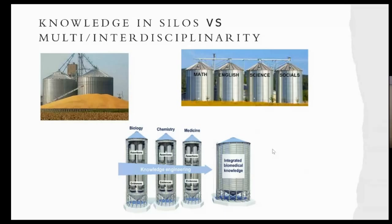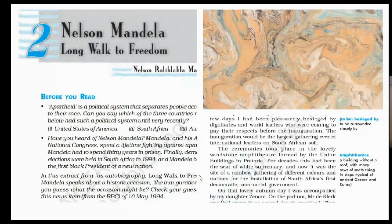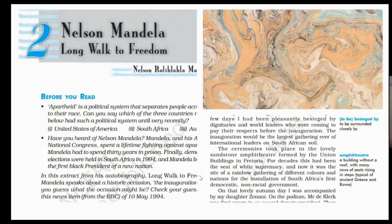Interdisciplinary or multidisciplinary knowledge is about not putting subjects in separate tanks or silos, but charting a path across different disciplines. Let me make that clear with an example from my paper. There is Miss Dhania, who is teaching an English class — this is from class 10. She's teaching a lesson on Nelson Mandela's Long Walk to Freedom, an excerpt from Mandela's autobiography.